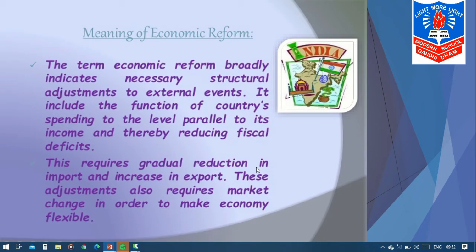This requires a gradual reduction in imports — the government wants to decrease imports — and an increase in exports. The government wants to increase the exports of our country. These adjustments also require market changes in order to make the economy flexible. The government wants to gradually change the entire market system and make the economy flexible.